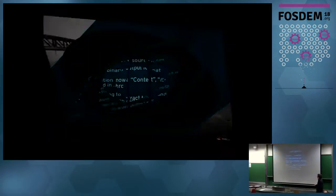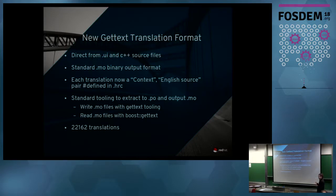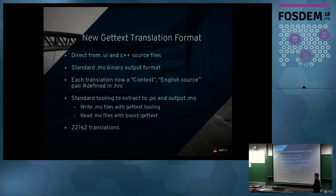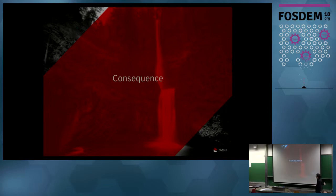For LibreOffice 6.0 we've finally gotten rid of that old file format and are now using the standard gettext format. This means we can extract translations directly from our .ui files and C++ source with standard tooling. We use gettext to produce .po files, which go up to the translation website and back down, then use gettext to create standard .mo output files, read using the Boost gettext implementation. That's 22,000 translations across about 1,000 UI files moved from old binary formats into standardized .ui XML and .mo file formats.